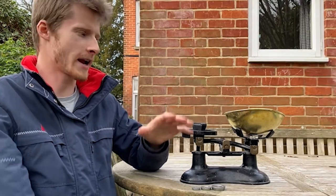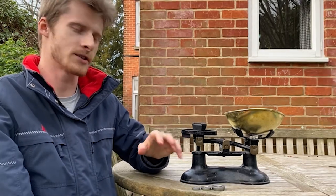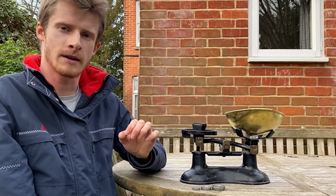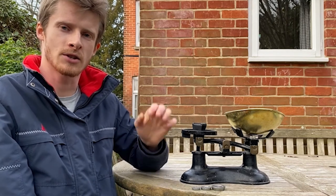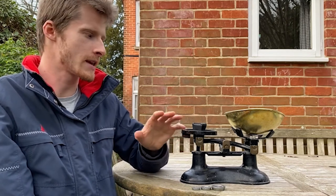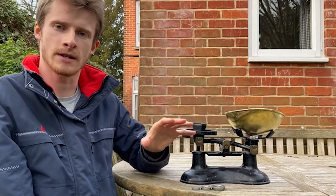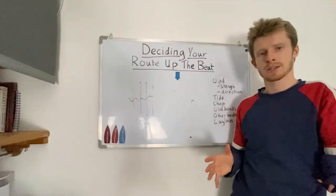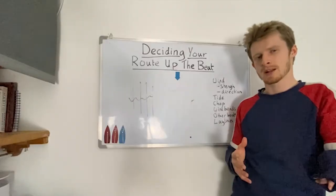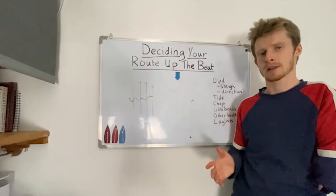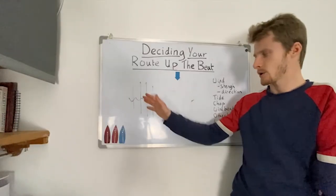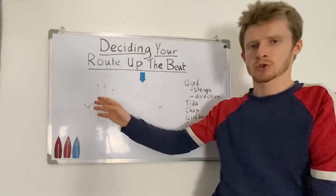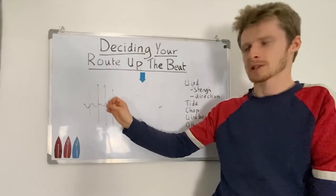Hopefully this example explains how we're weighing up multiple different factors against each other to come to a conclusion about which way to go up the beat. It's certainly not easy and you'll never be 100% correct, but if you practice you'll intuitively get better at doing this over time. Unless the advantage is really big, it's unlikely you want to bang out to one side, because once you've banged the corner you've got no strategical options left.